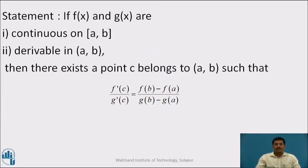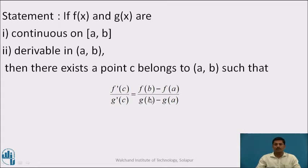Statement. If f(x) and g(x) are any two functions defined on closed interval [a, b], satisfying the conditions that both are continuous on [a, b] and differentiable on open interval (a, b), then there exists a point c between a and b such that f'(c) / g'(c) = [f(b) - f(a)] / [g(b) - g(a)].